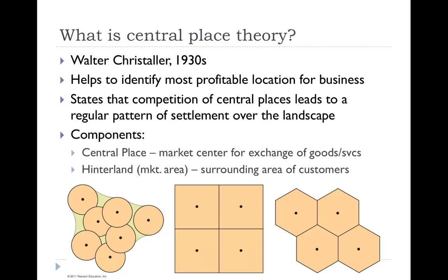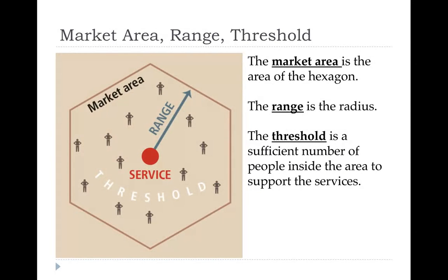The components of Central Place Theory include the central place — the market center where goods and services are exchanged — and the hinterland, also called the market area, which is the surrounding area where customers are located. The three key concepts are market area, range, and threshold. The market area is that hexagonal shape; the range is the radius — how far someone is willing to travel for a service; and the threshold is how many people are needed to keep that business profitable.